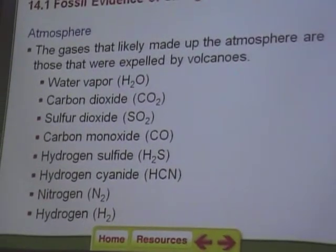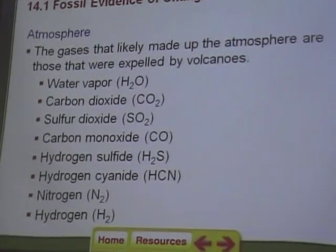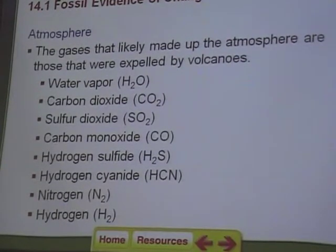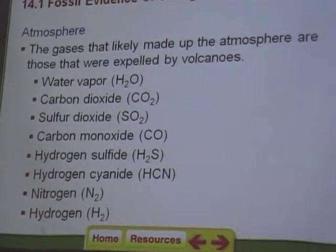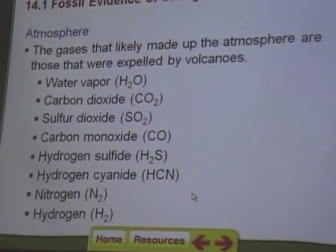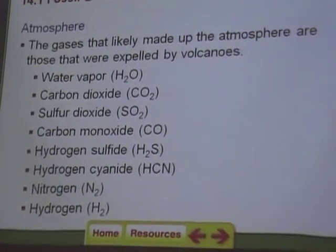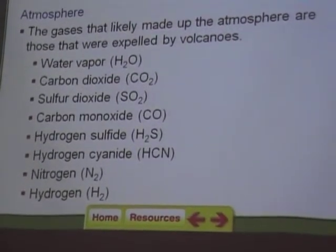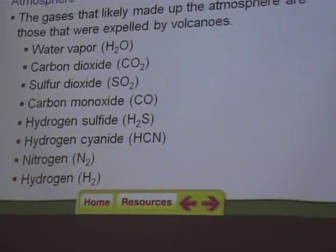On early Earth there was a lot of volcanic activity, but there was no photosynthesis going on — we don't think — because there was no oxygen in the atmosphere. If you went back 2 billion years, you wouldn't be able to breathe because there was no oxygen. The dinosaurs were more recent — only 65 to 300 million years ago. We're talking about billions of years ago, way before the dinosaurs.